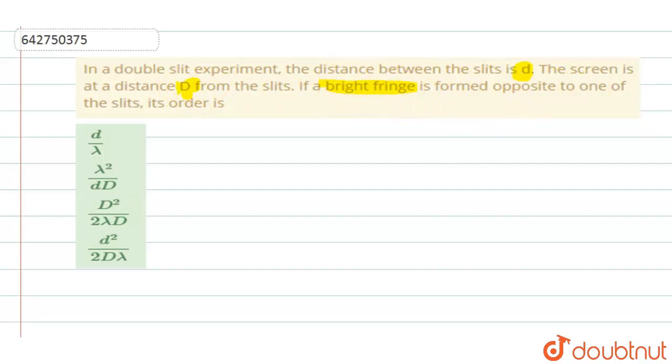So, you are supposed to find in a double slit experiment the order of the fringes. A bright fringe is formed opposite to one of the slits and they are saying about the distance between the slits.